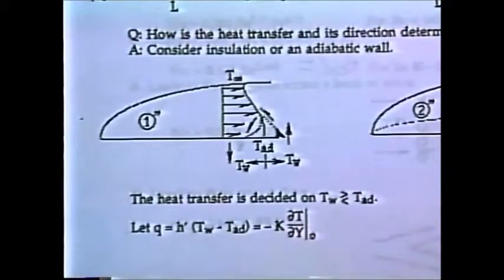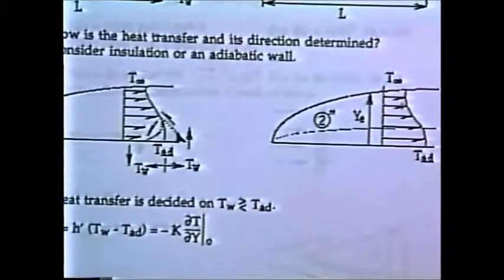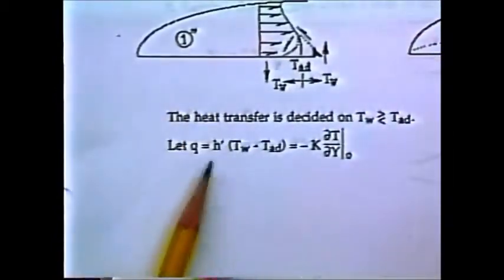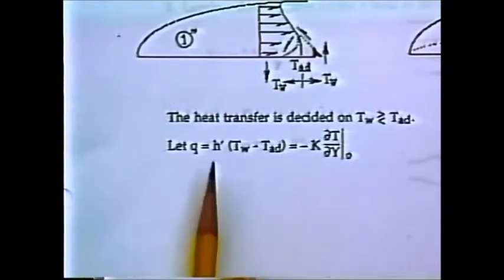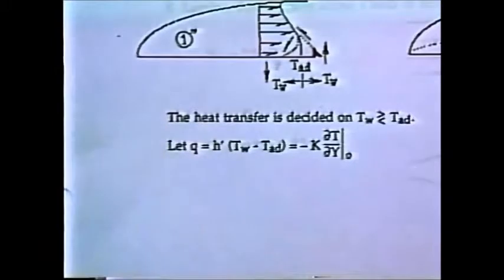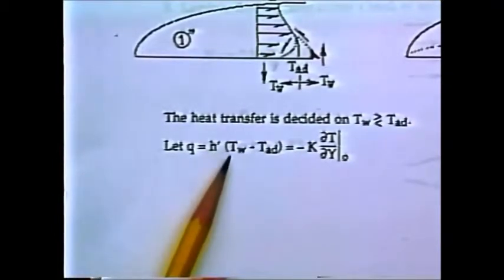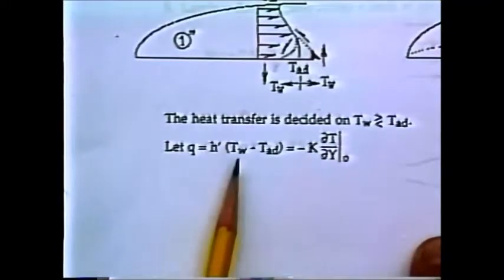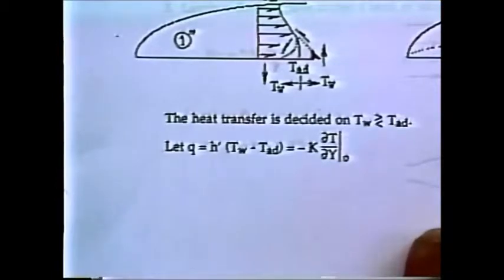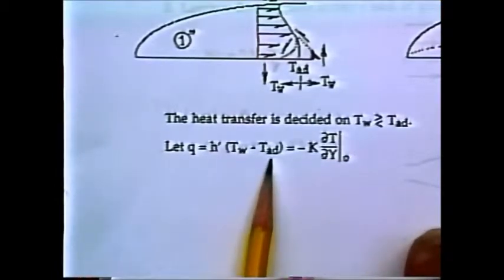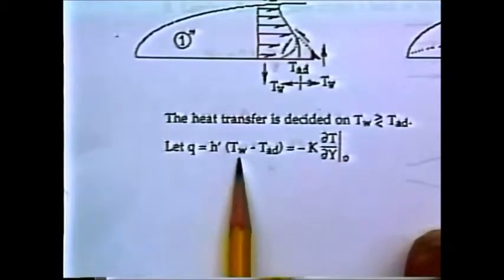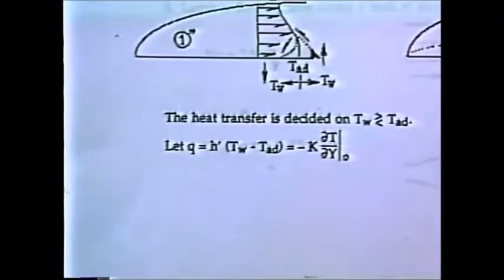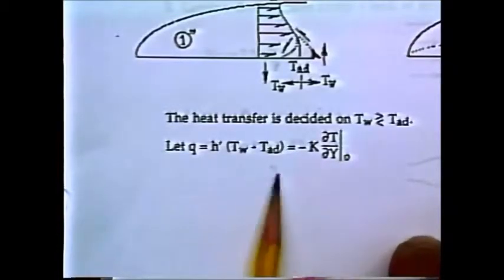Because of the funny situation with frictional heating, Newton's cooling law must be revised. Normally q equals h times temperature difference between wall and fluid, but with frictional heating the outside fluid temperature no longer dictates heat flow direction. So we must redefine using the adiabatic wall temperature T_adiabatic instead of T_infinity. This approach is used in aerodynamic high-speed heat transfer.